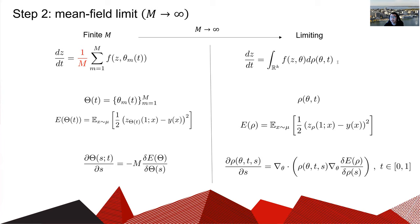The second step is the mean field limit. To consider the mean field limit, we let the number of parameters m go to infinity. The ODE for z will change to an OIE. We can imagine that theta_m(t) are i.i.d. drawn from rho_theta(t), and then the empirical expectation converges to the true expectation. As m approaches infinity, the set of parameters theta(t) is replaced by a distribution rho_theta(t). In our work, rho_theta(t) is a curve of probability distributions — for each fixed t it is a probability distribution in theta.